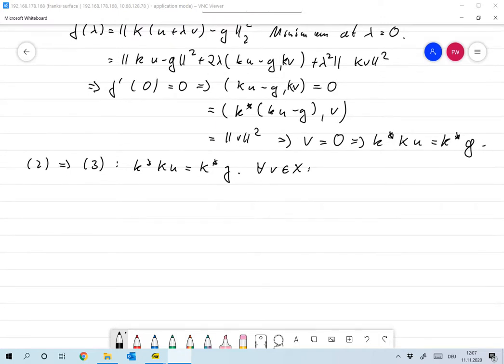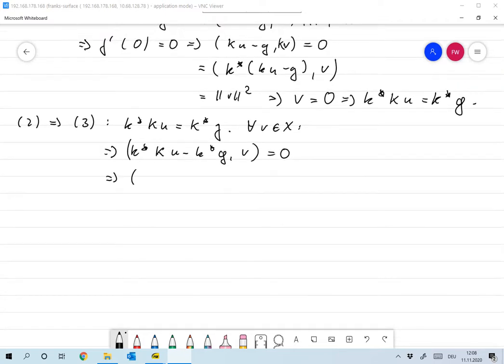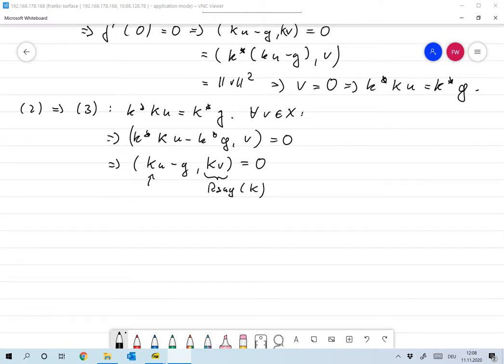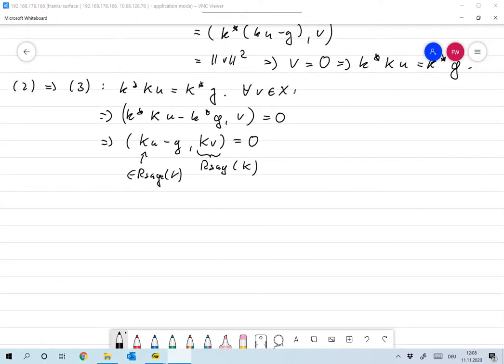Then take any v in x, and we have that obviously now the norm of k star ku minus g with scalar product with v is zero, which means that ku minus g scalar product with kv is zero. So this says that obviously these are all elements in the range of k, and this is an element of range of k.